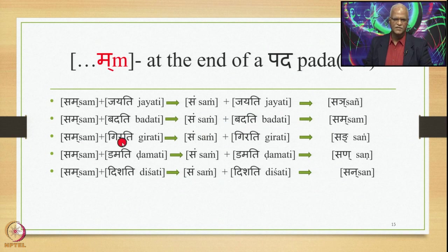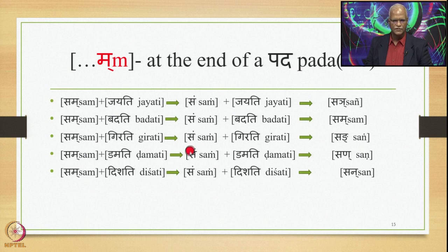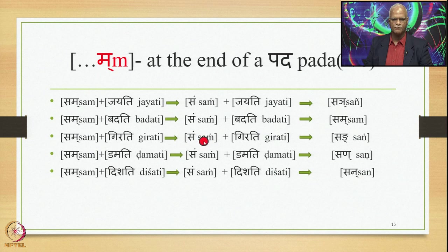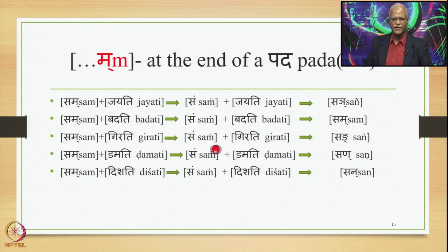Sam plus Girati: Ma at the end of a pada is substituted by Anuswara by 8.3.23, giving Sam Girati. Then 8.4.59 (Vapadantasya) substitutes the Anuswara by the nasal Parasavarana of G, which is Ma, giving Sam-Ma-Girati optionally, and Sam Girati (with Anuswara) as the other optional output.